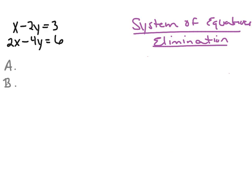Let's take a look at a second example for solving a system of equations using the elimination method. Once again, the first step is to make sure both equations are set up in standard form, so that the x's, the y's, and the constants are lined up one on top of each other — that step has been done for us. So I'm moving on to the second step: we need opposite numbers in front of the x's or y's. In this case, I'm going to multiply that first equation by negative 2.